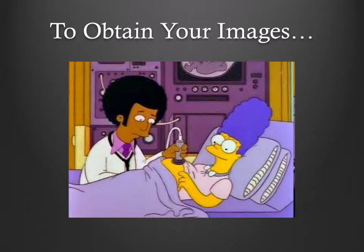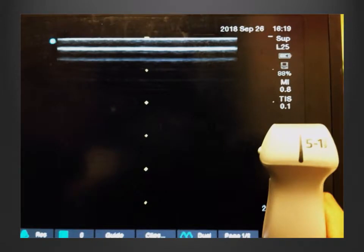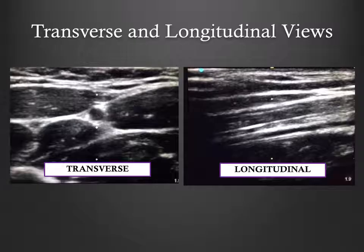Now, to obtain your images. Start by orienting yourself on your screen. Ensure the marker on the probe is aligned with the marker on the screen. The longitudinal view orients the probe along the sagittal plane, defining your axis in the caudad or cephalad directions. The transverse view provides an axial cut, defining your axis in the left-right direction.